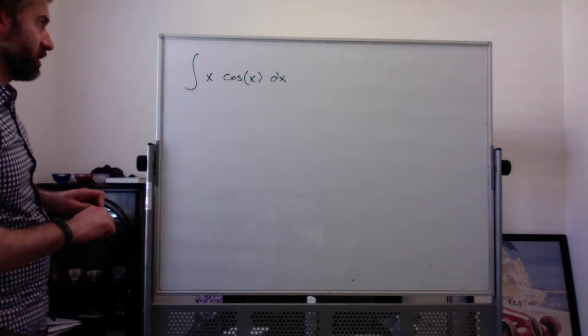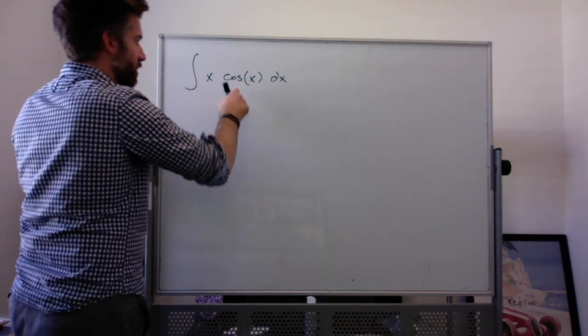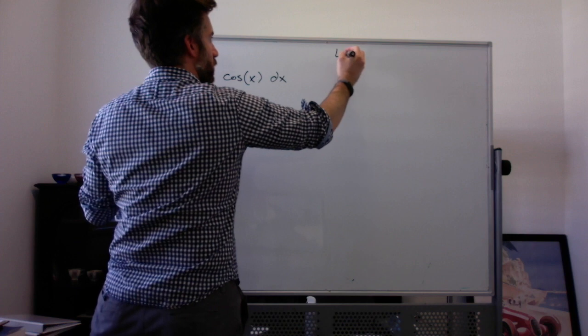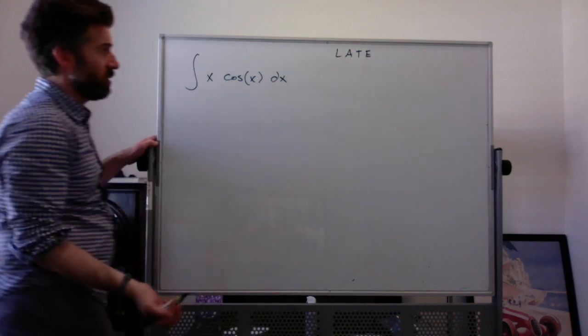Here is another integration by parts example. I'm integrating x times cosine x, and I'm using LATE as the acronym for what I want to pick for u.